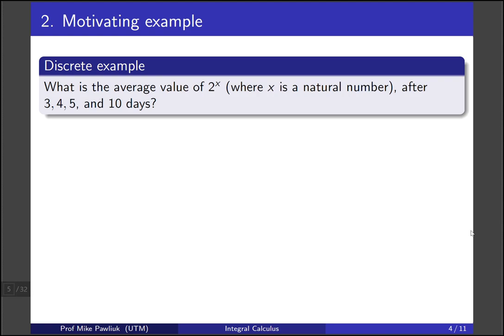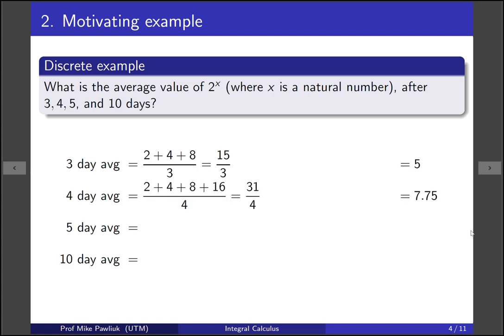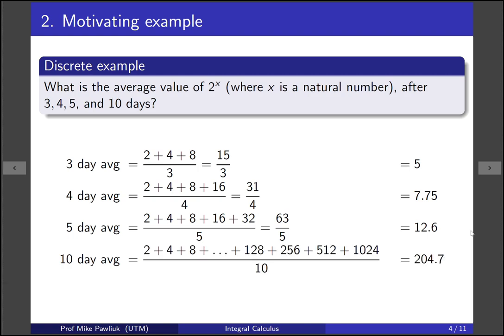Before we get into a continuous example of e^x let's first look at a discrete example which is looking at things with natural numbers. So what is the average value of 2^x where x is a natural number after 3, 4, 5, and 10 days? So the three-day average would be take the value at x equals 1, 2, and 3, add them up, divide by the number of terms. So in this case the answer would be 5. The four-day average would be 2 plus 4 plus 8 plus 16 divided by the number of terms so that would be 7.75. The five-day average would be about 12.6 and then jumping ahead to the 10-day average it would be about 204.7.